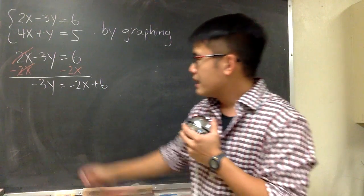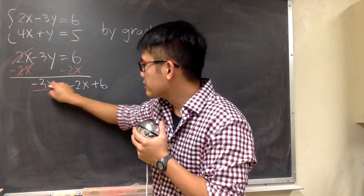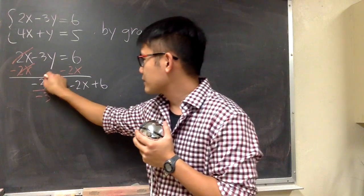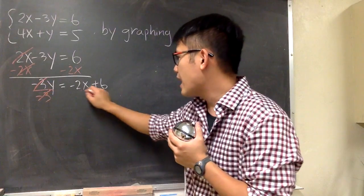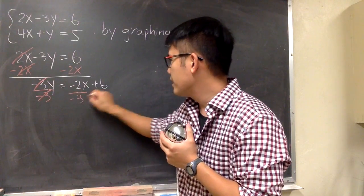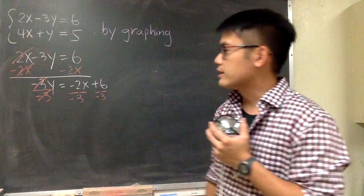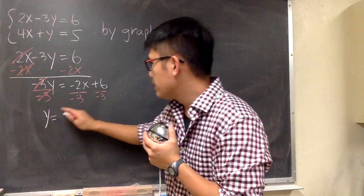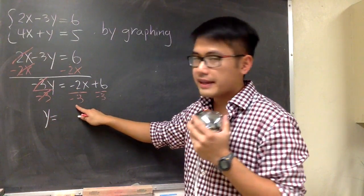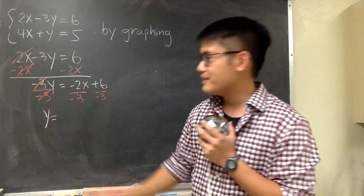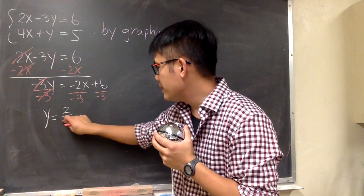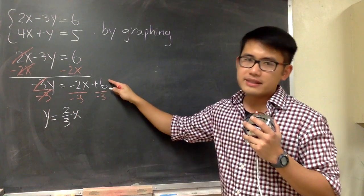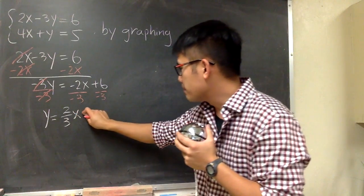This is negative 3 times y, so we have to divide by negative 3, so that these will cancel. Divide this by negative 3 and divide this by negative 3 as well. And we get y will be negative 2 divided by negative 3, which is positive 2 over 3 times x. And 6 divided by negative 3, we get minus 2.